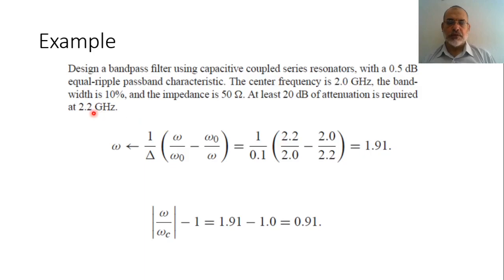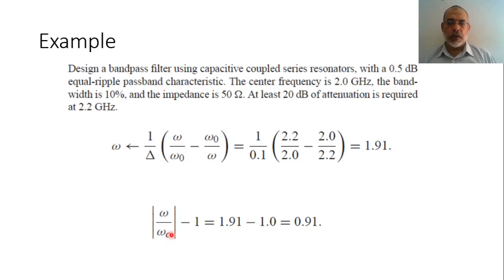This frequency in the bandpass filter — the corresponding frequency in the low-pass filter — is 1.91. In the low-pass filter prototype, omega over omega_C minus 1 would correspond to 1.19 over 1, giving a difference of omega over omega_C minus 1 equal to 0.91.